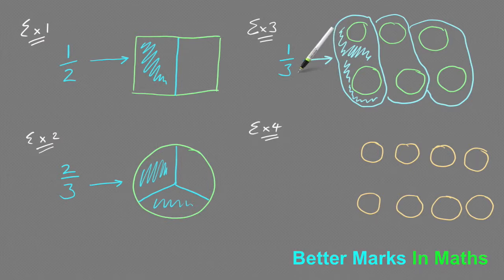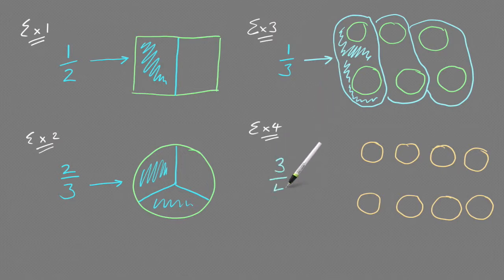And once again, the number on the bottom is telling me how many equal parts, or how many equal groups in this case, to divide the grapes into. And the one is telling me how many of those groups that I want. In example 4, I want three-quarters of these eight CDs. So the 4 is telling me I need to divide them into four equal groups, and that would mean there would be two in each group, like such.